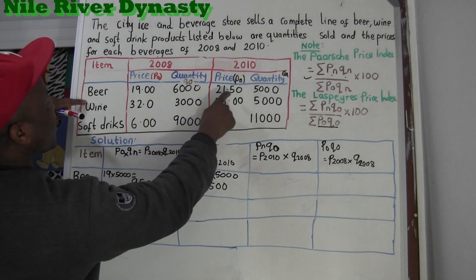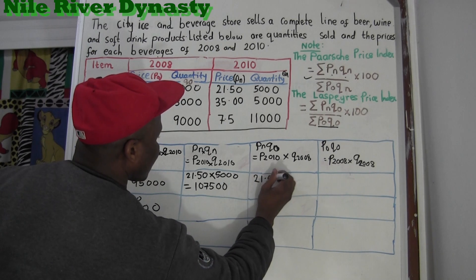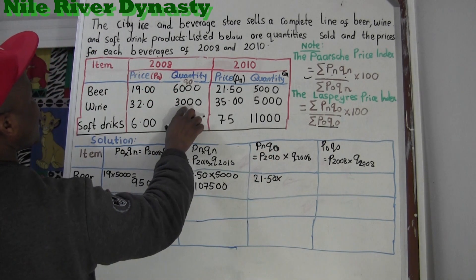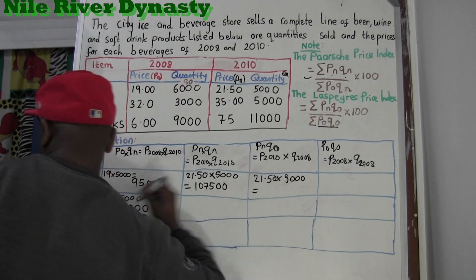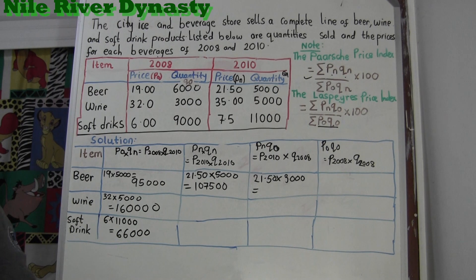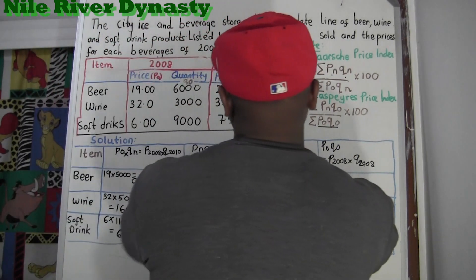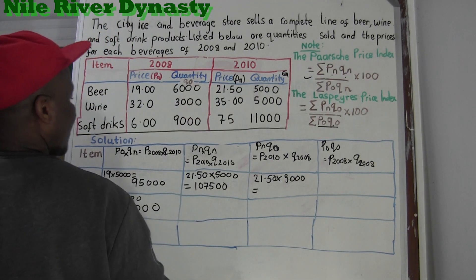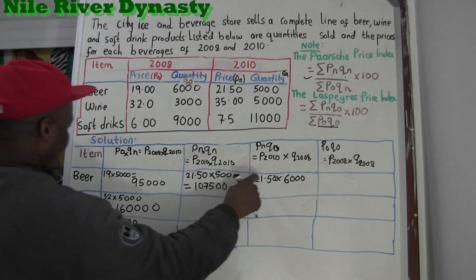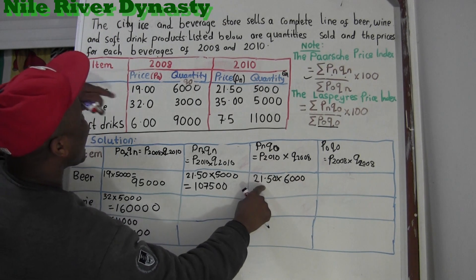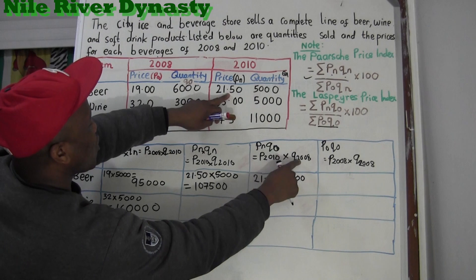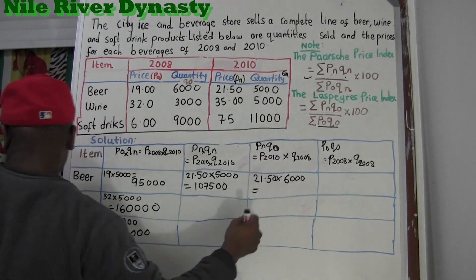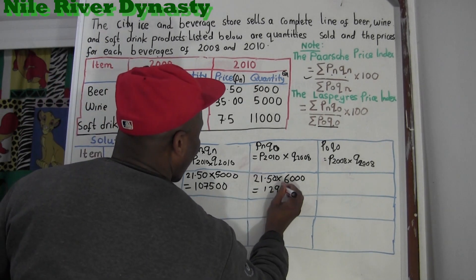Now for pn·q0 for beer: pn is the 2010 price, 21.5, times q0. Q0 for beer is 6,000 — excuse me, I was wrong, it's 6,000. So 21.5 × 6,000 = 129,000. Now for p0·q0 for beer: p0 is 19 times q0 which is 6,000, so 19 × 6,000 = 114,000.